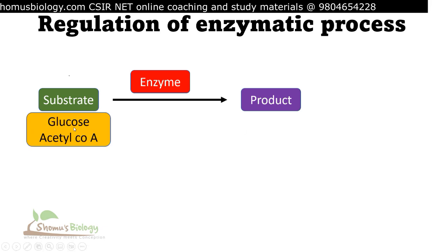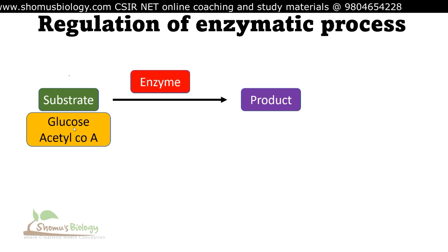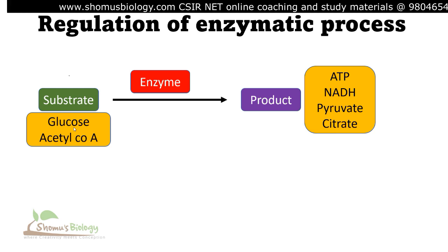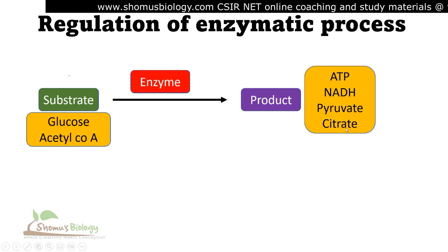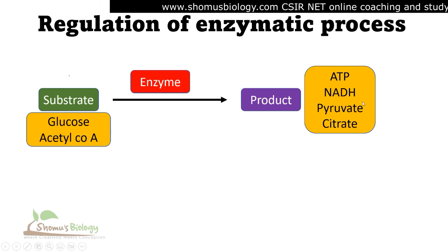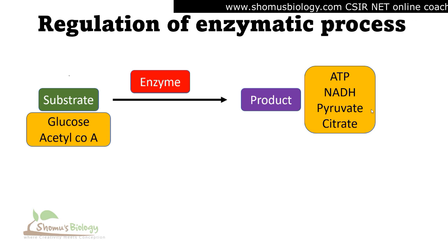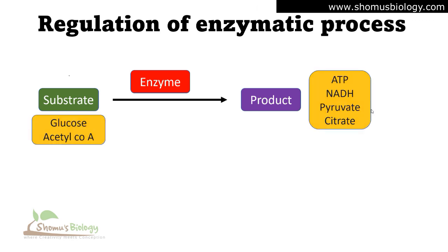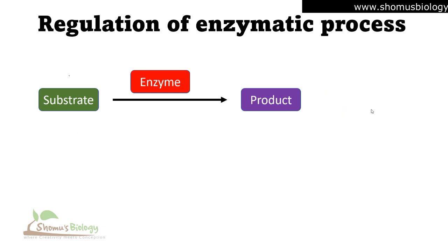If the substrate concentration is high — for example, glucose is a substrate for glycolysis and acetyl-CoA is a substrate for the TCA cycle — the reaction is positively influenced. The product can be pyruvate or citrate for glycolysis, or intermediates within the TCA cycle. In all these catabolic reactions, we are producing energy as ATP, and also NADH and FADH₂ in reduced form as a result of redox reactions catalyzed by dehydrogenase enzymes.